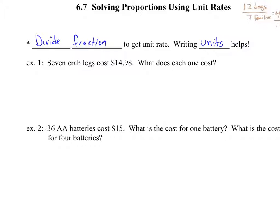So example one is just going to be kind of getting that unit rate. If we have seven crab legs costs $14.98, and I really don't have a clue what they cost, I just made this up. So if we have that, what does each one cost? So now my question is if we want to know what each one costs, are we looking at the number of legs per dollar or are we looking at the number of dollars per leg?